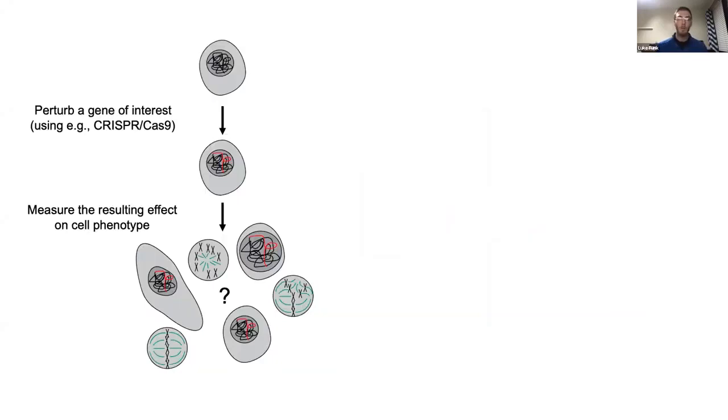One way to study the functions of genes and their protein products is by disrupting or perturbing genes of interest. Here I'm demonstrating that by turning part of the genome red. In modern biology, this is usually done using a CRISPR-Cas9 system. After perturbing a gene, we want to know how that affects the cell's function or its phenotype.